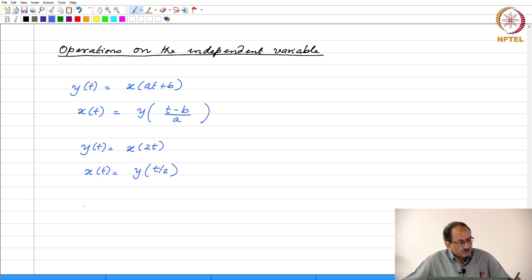The corresponding counterpart for this in the discrete time case is y(n) = x(mn + N). So this is the discrete time counterpart of the affine transform.